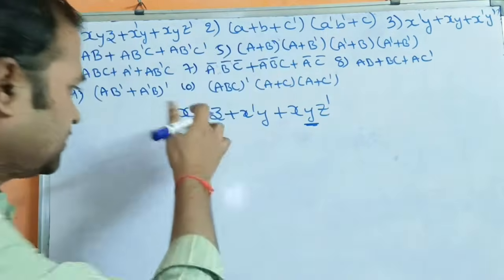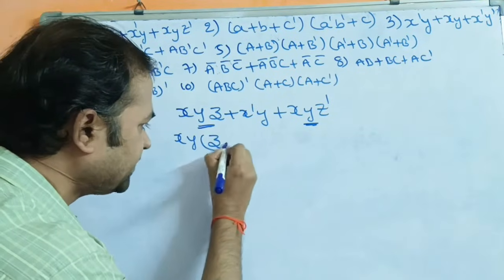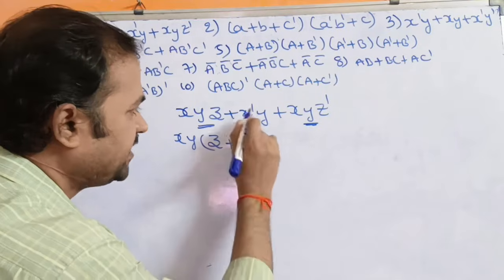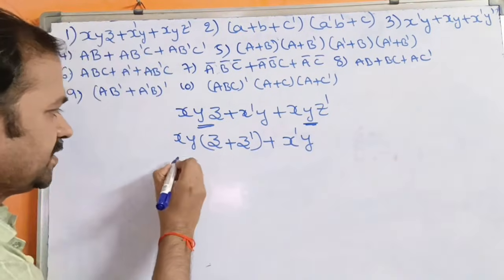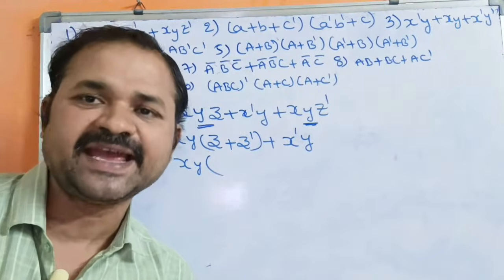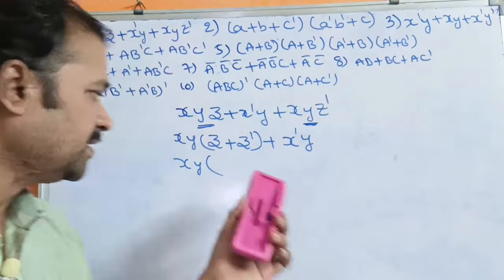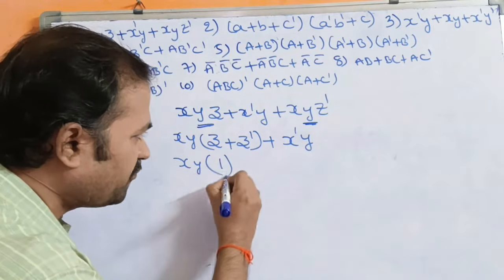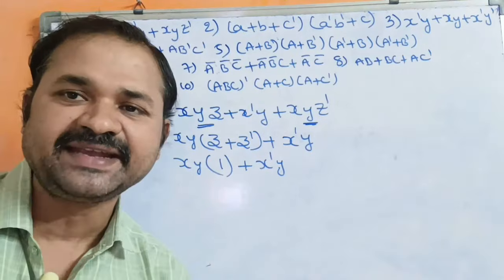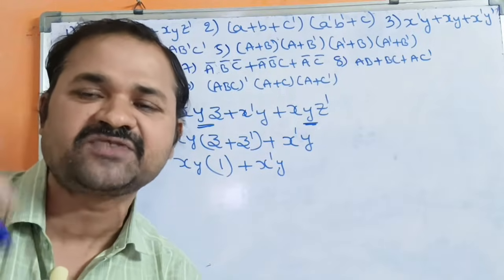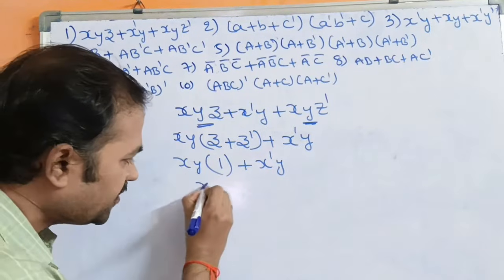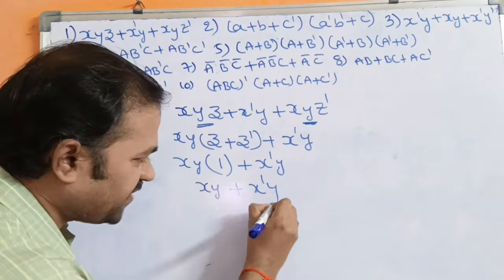The first two terms contain z, and this term contains z'. So the remaining term is x'y. We have the formula a + a' = 1, so z + z' = 1. This gives us xy(z + z') + x'y = xy·1 + x'y = xy + x'y.